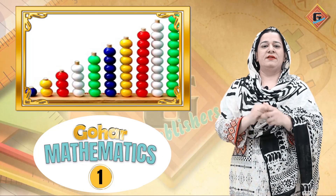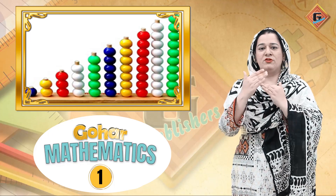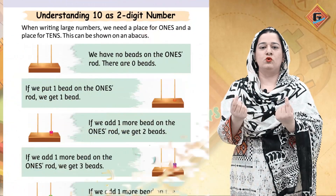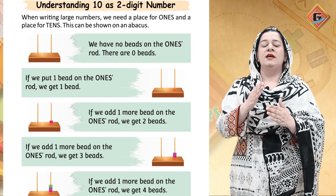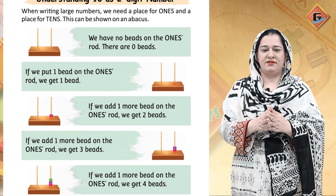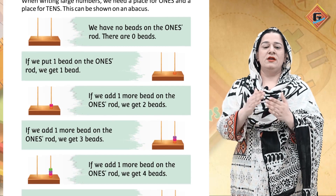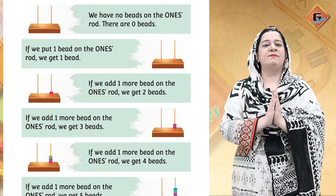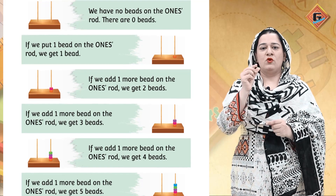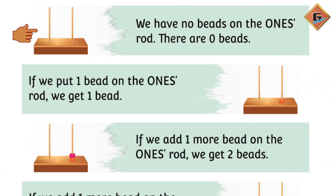Look at the screen — aap screen pe dekh rahe hain ye ek abacus hai. Isme abhi hum aapko sirf mukhtasar jo hamein zaroorat hai utni shape dikha rahe hain. Aapko do rods nazar aa rahi hain aur ek base hai. Jab hum start karenge ones side se, aapne hamesha right side se shuru karna hai. Abhi isme koi bead nahi hai — ye represent karta hai zero ko, yaani nothing.